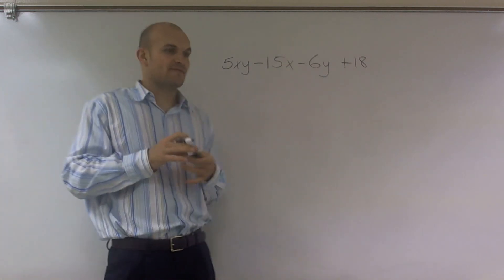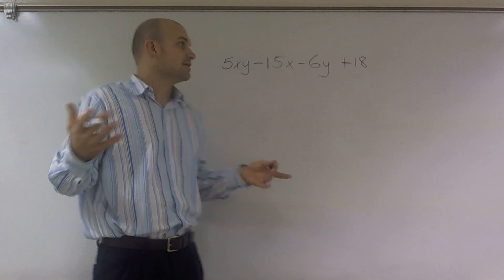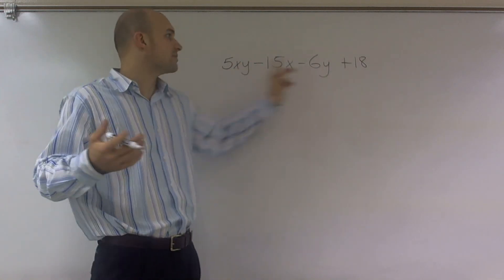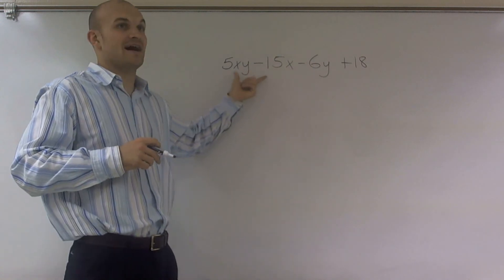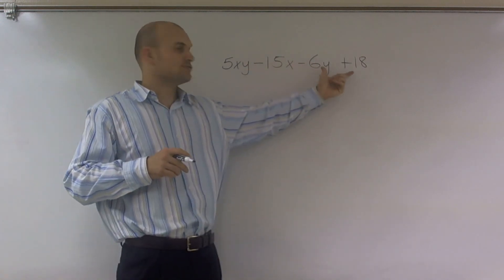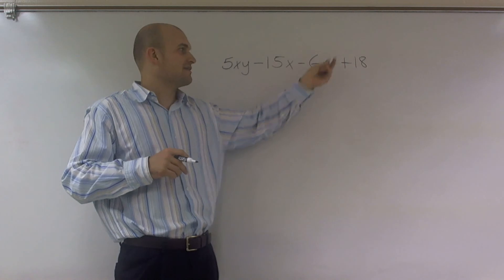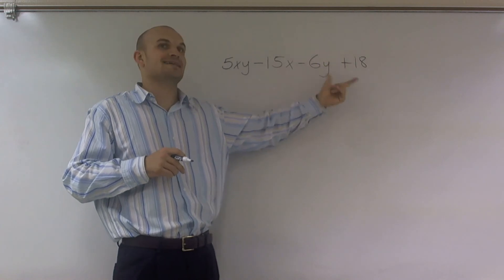So remember, when we're factoring, you always want to find what is the common denominator. Well, all of these do not share anything, right? These two share a 5, meaning I can divide a 5 into both of these. These two do not share a 5, though. So I can't divide a 5 into these. Therefore, I can't take a 5 out.